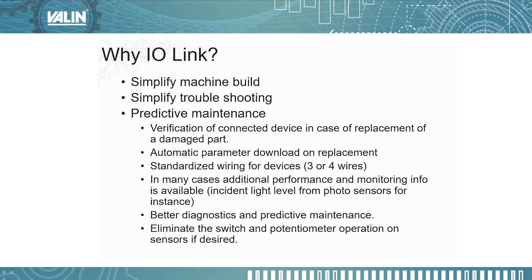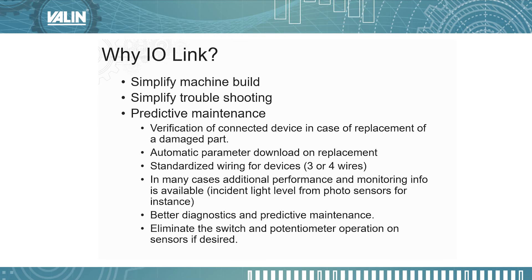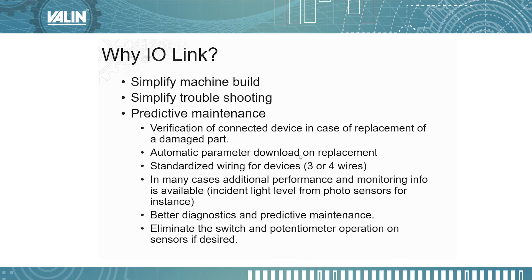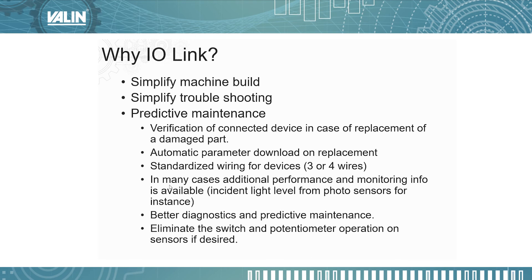In addition, there are multiple status bits that tell you whether the sensor is wired correctly, if it has a short circuit, or if it's the wrong sensor — for example, if you replaced a broken photo sensor with the wrong model, it'll tell you that. This is also good for predictive maintenance because you get verification of the connected device. In case of replacement, you can confirm you put the right part in, and automatic parameter download will configure it. The standardized wiring helps whether you have a three-wire or four-wire IO-Link device, and in many cases performance and monitoring info is available, like incident light level from photo sensors.